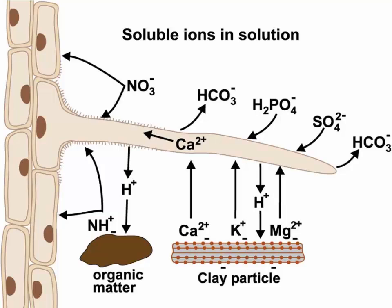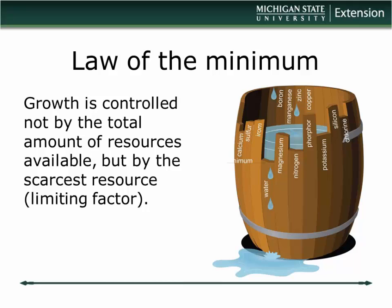CEC depends on the amount of clay particles in the soil — clay is negatively charged, so opposites attract and it holds onto our cations. Organic matter does the same. One way to improve CEC is to increase organic matter, which improves the soil as a reservoir for nutrients. Understanding CEC is especially important when managing cations like potassium.